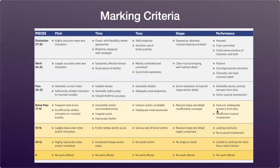Now let's have a look at each of these marking criteria. Each song is marked based on five musical criteria. The first one is pitch, which has to do with accuracy and intonation. Time has to do with fluency and flexibility in rhythm. Tone has to do with the timbre or color of the projected voice quality. Shape has to do with using musical details like dynamics, inflection and word painting. Performance, the last one, has to do with confidence, storytelling, clarity, diction and communication with the listener.